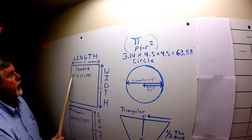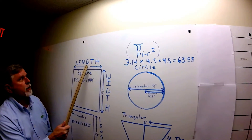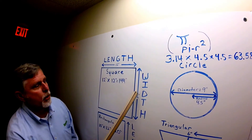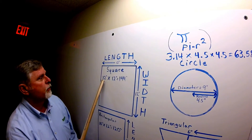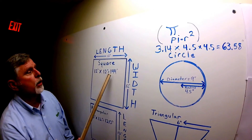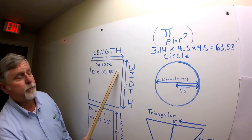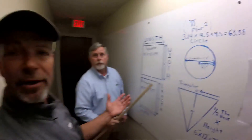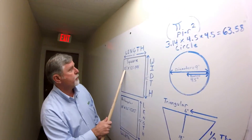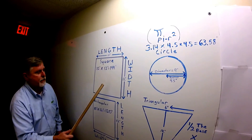With a square, we would do length times width. In this case, we've got 12 inches for our length and 12 inches for our width. We take 12 times 12, which equals 144 square inches. And that could be extrapolated to square feet — that could be 12 feet or any measurement that we have.